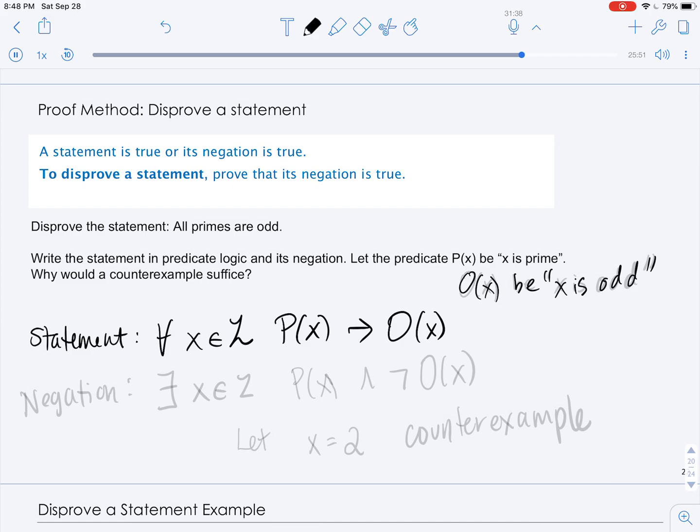And I'm using the predicate P(x) to mean x is prime and O(x) to mean x is odd.